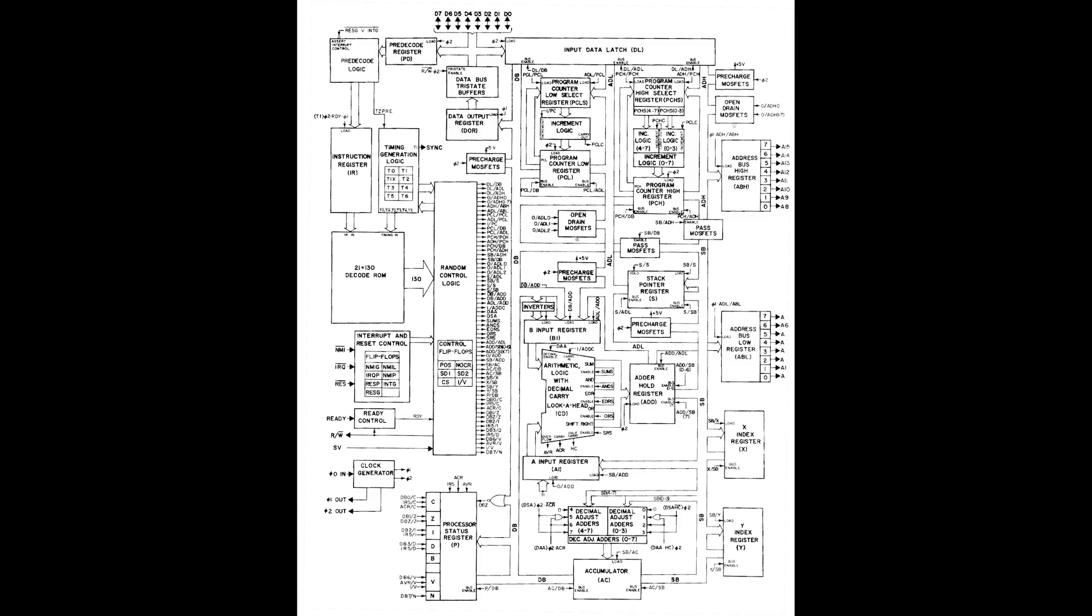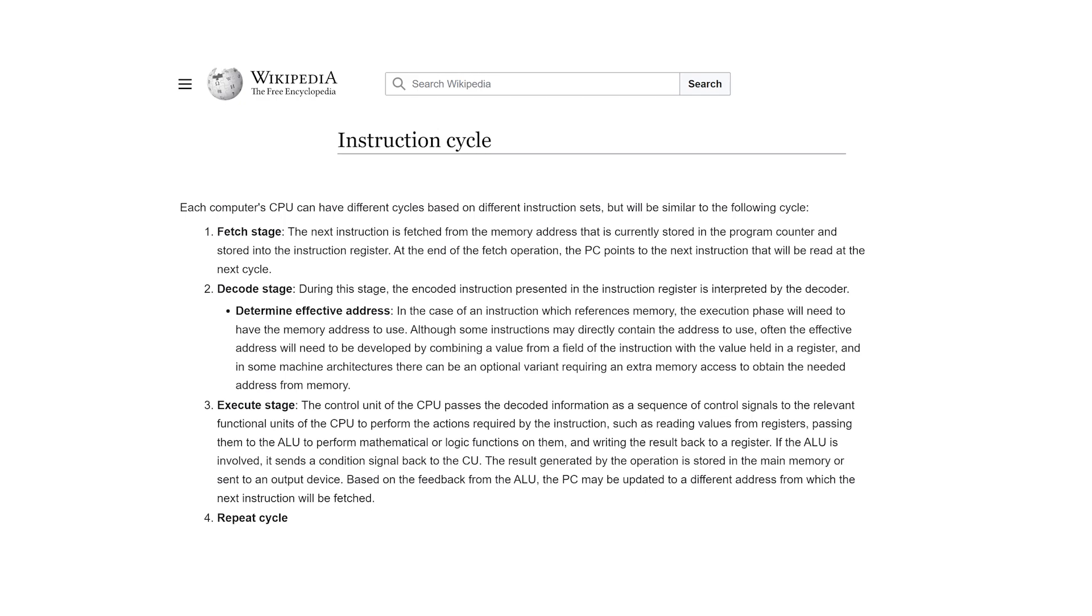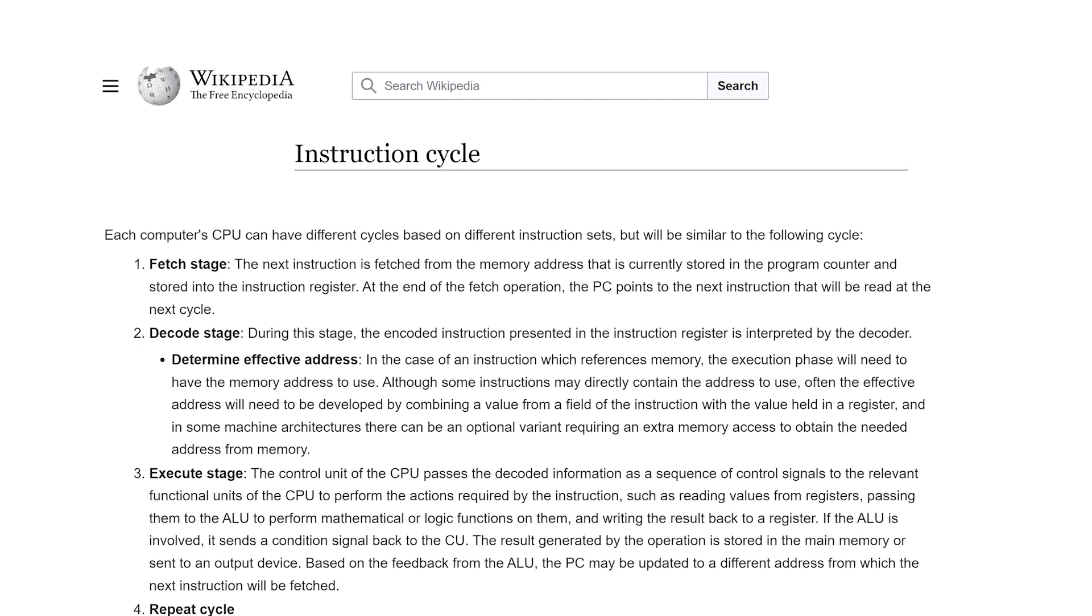The 6502 microprocessor is based on the von Neumann architecture, and at the heart of these machines is the Fetch, Decode, Execute cycle. The 6502 has no HALT instruction, it just endlessly loops through these three steps, one at a time.